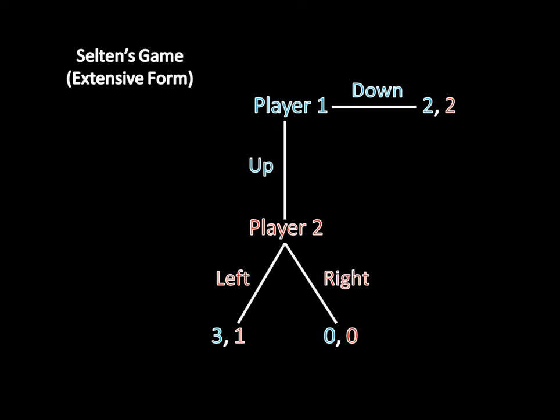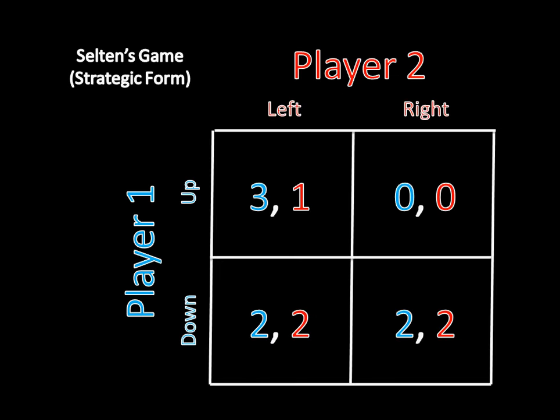We call this the extensive form of a game. That's in contrast to this, which is the strategic form or matrix form or normal form of a game.